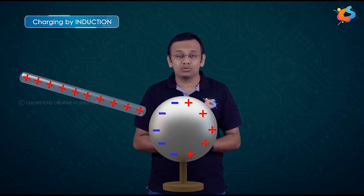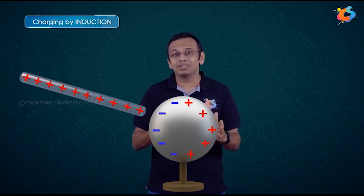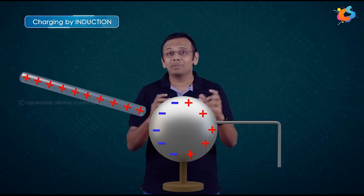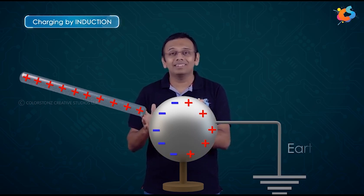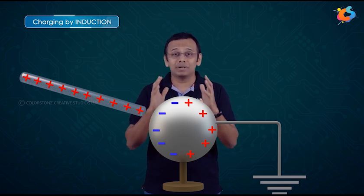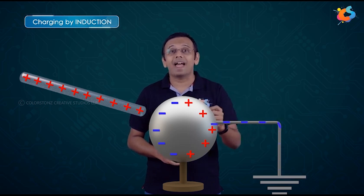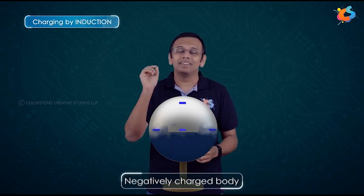But if I want to give a net charge to this body, we need to connect the metallic sphere to the earth using a metallic wire — a process called earthing or grounding. As soon as we connect the metallic sphere to the earth, electrons or negative charges start flowing from the earth towards the sphere, neutralizing the positive charge on that side. Once the flow of negative charges from earth to the sphere has stopped, we can remove the connection with the earth and also remove the positively charged rod. The negative charges remaining on the sphere will then distribute themselves uniformly — and this is how, using induction, we have generated a negatively charged body.